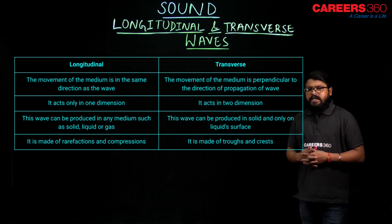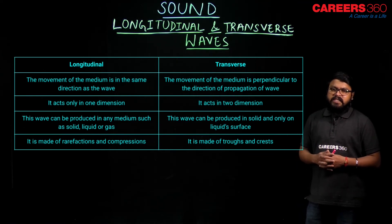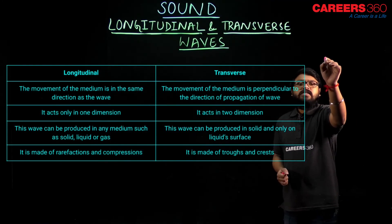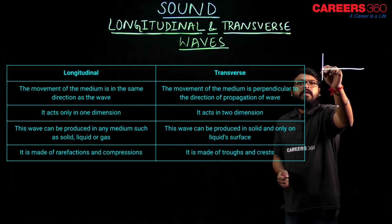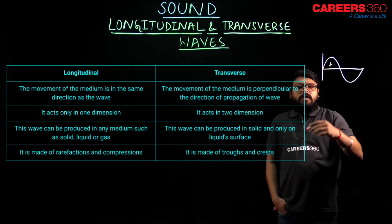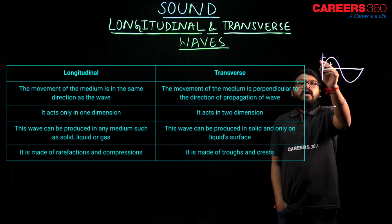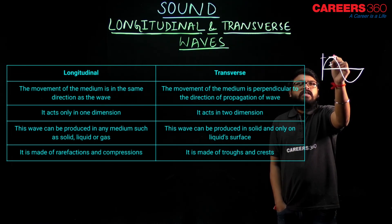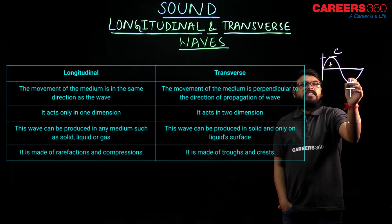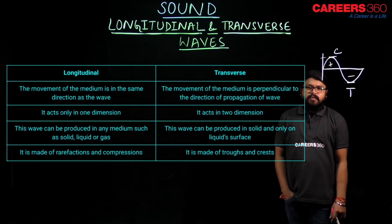For longitudinal waves, they are made of rarefactions and compressions. In case of transverse waves, they are made of troughs and crests. What are troughs and crests? In a transverse wave, the upper or positive amplitude — the maximum upper length of the wave — is known as the crest, and the lower part is known as the trough. So crests occur at positive amplitude and troughs occur at negative amplitude of the transverse wave.